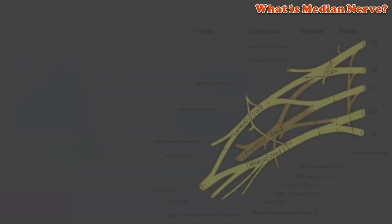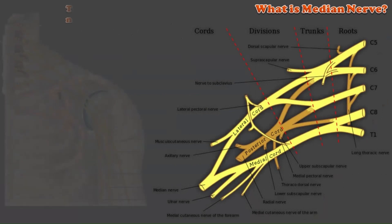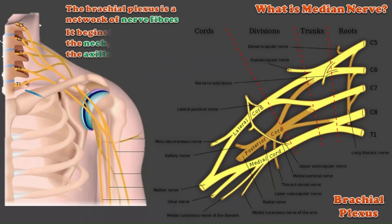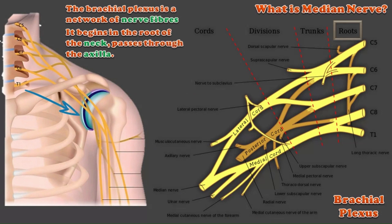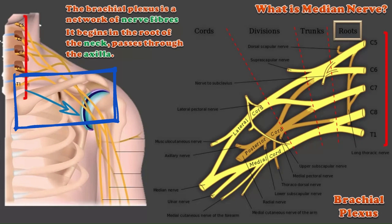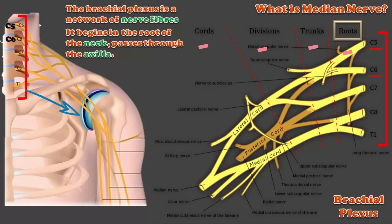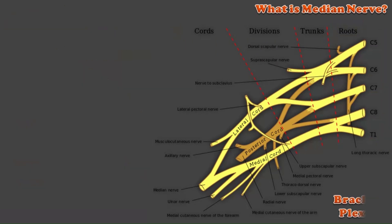The median nerve plays an important role in carpal tunnel syndrome, so it is very important to know about the median nerve in detail. First, a network of nerve fibers called the brachial plexus originates from the spinal cord and goes to the armpit. The brachial plexus is divided into four parts, which include C5, C6, C7, C8, and finally T1. These five roots are divided into three trunks.